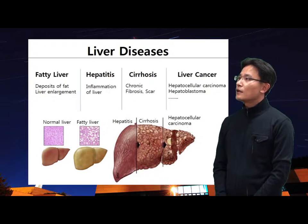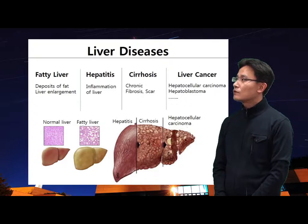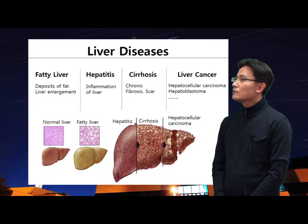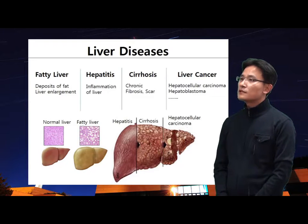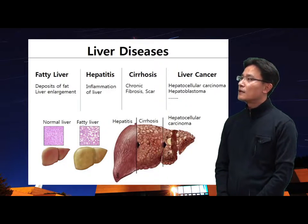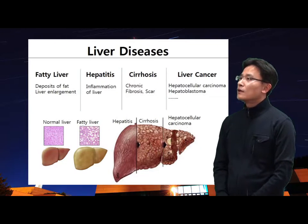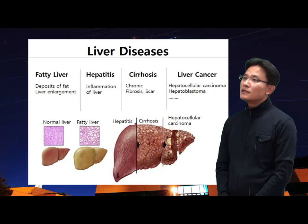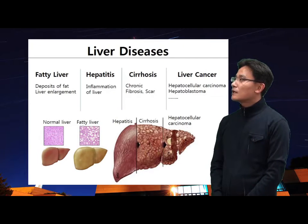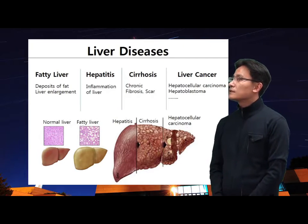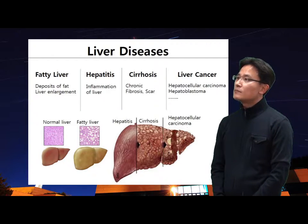Liver cancer consists of malignant tumors that grow on the surface or inside the liver. The most frequent type is hepatocellular carcinoma, which accounts for 75% of all liver cancers. Another type formed by liver cells is hepatoblastoma, which is formed by immature liver cells and is a rare malignant tumor that develops in children.